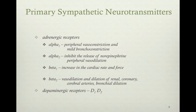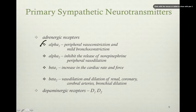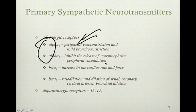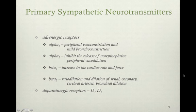Alpha-1 causes peripheral vasoconstriction and mild bronchial constriction. Alpha-2 inhibits the release of norepinephrine and causes peripheral vasodilation. Importantly, if both are stimulated, alpha-1 will always override alpha-2 — so we always get vasoconstriction even though alpha-2 provides vasodilation. Alpha-1 will always overpower alpha-2.